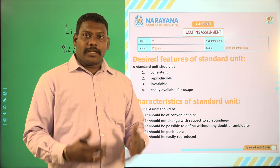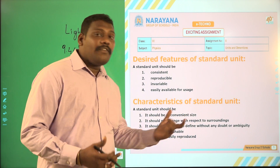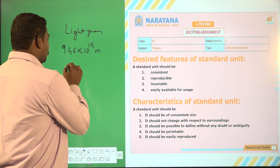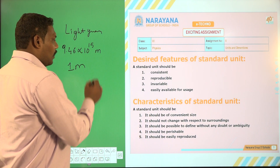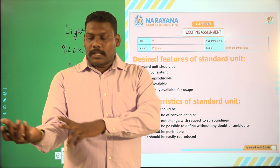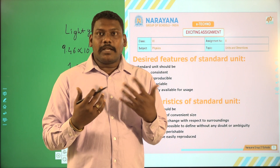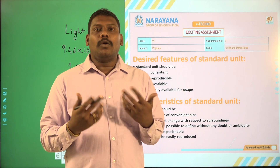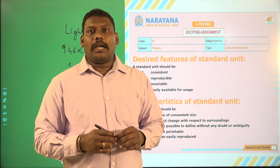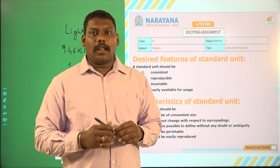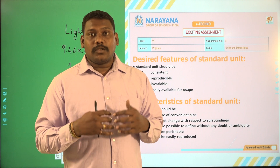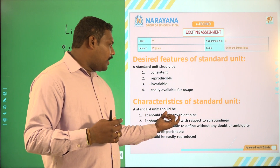So to measure, it should be in a convenient size. For example, if I take 1 meter — 1 meter is around this length. So I can measure it out. If I go to a shop to buy an electric wire, I will ask to give me 2 meters of wire, 3 meters of wire. So like that, it should be in a convenient size.